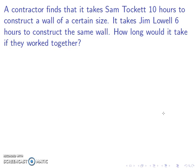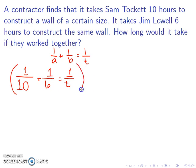A contractor finds that it takes Sam Talkit 10 hours to construct a wall of a certain size. It takes Jim Lau 6 hours to construct the same wall. So how long would it take if they worked together? So for this one, we have to use the formula 1 over a plus 1 over b is equal to 1 over t. So I know that it takes Sam 10 hours, and it takes Jim 6 hours. So we need to multiply by the common denominator. The least common denominator between 10 and 6 is 30. So we're going to multiply by 30t.